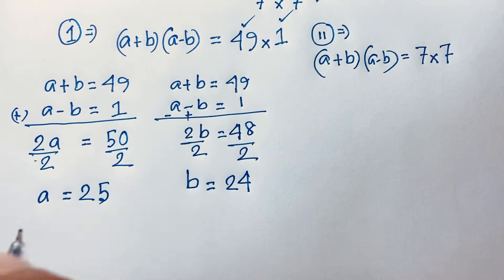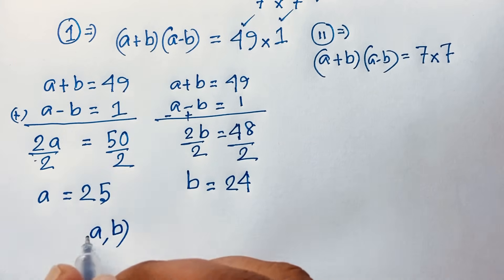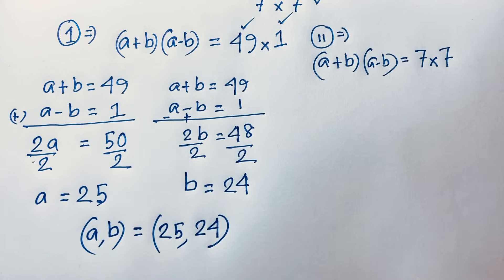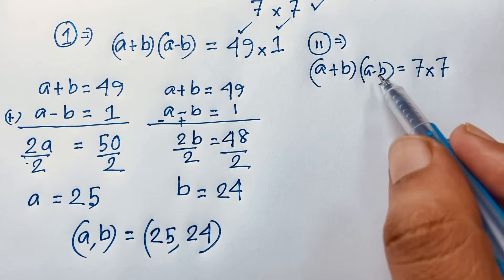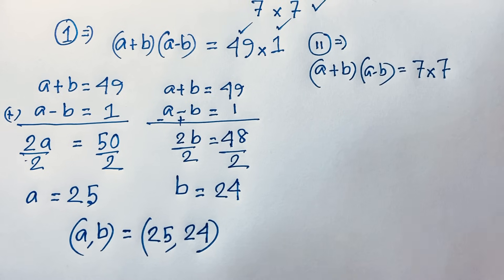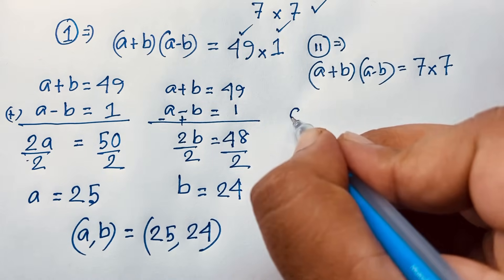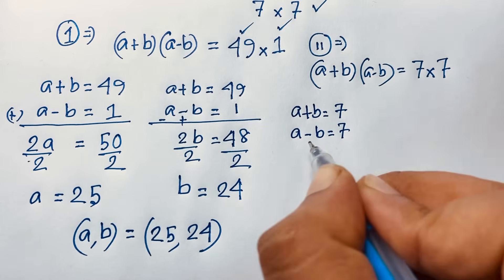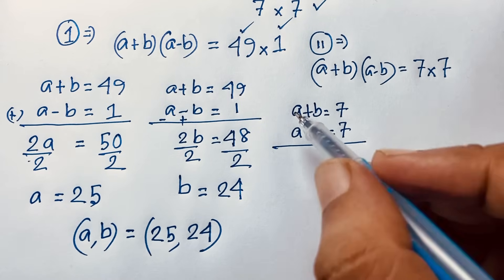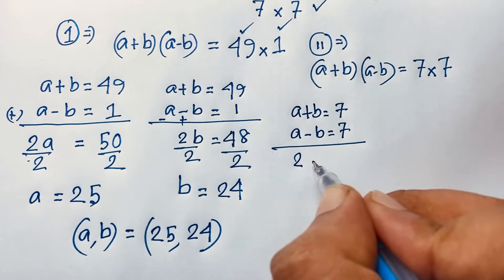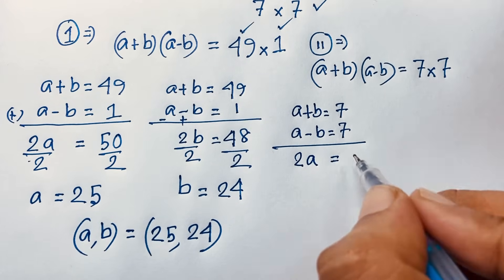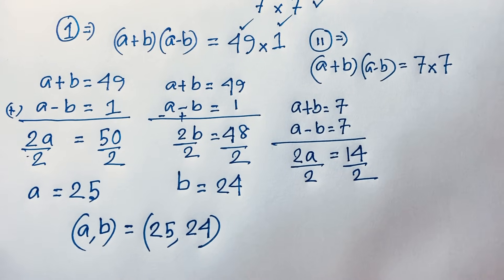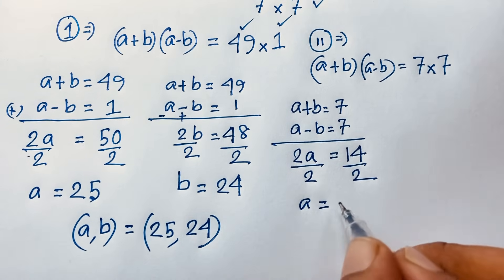So from the first case, (a, b) = (25, 24). For the second case, (a + b)(a - b) = 7 × 7, so a + b = 7 and a - b = 7. Adding both equations: 2a = 14. Dividing by 2 gives a = 7.